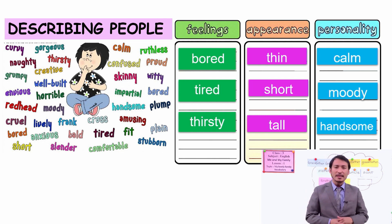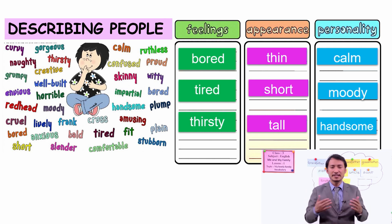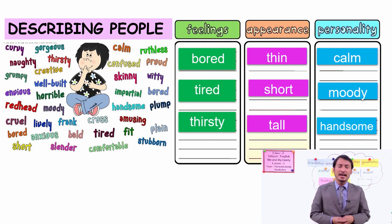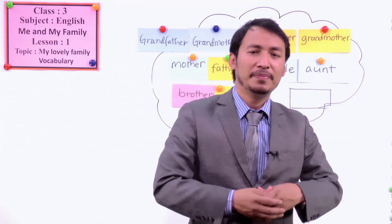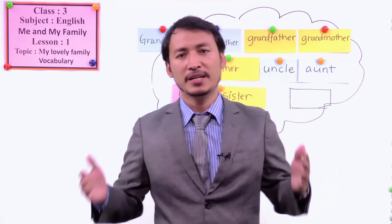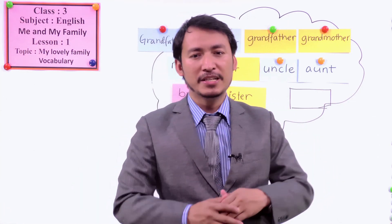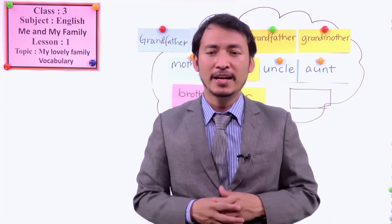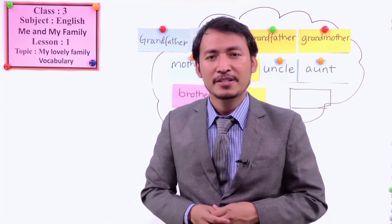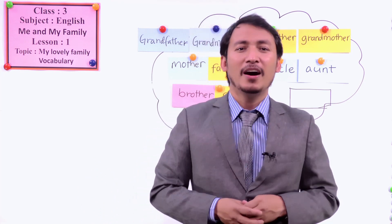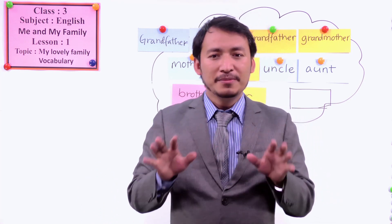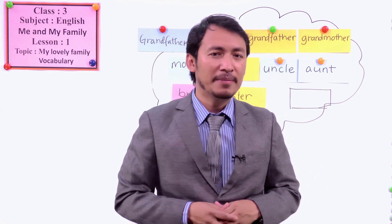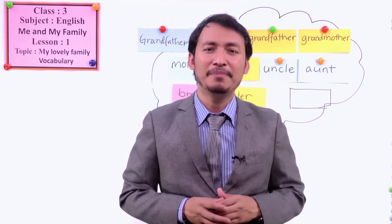Another word for personality is handsome. If someone has all the fitness, a fit body, good appearance, and all feelings are okay, then you can say handsome. These are the words for describing — some examples. This is how you can describe your family members.